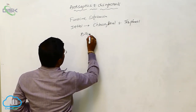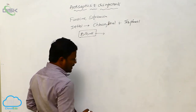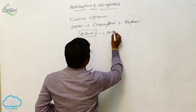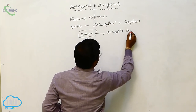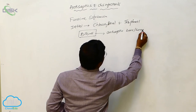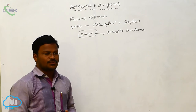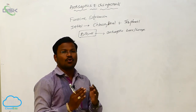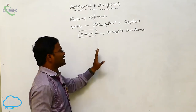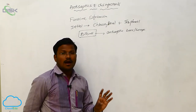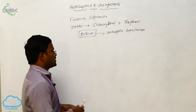Bithionol is a chemical substance which is used to prepare antiseptic bars or soaps. These antiseptics serve to kill or to stop the growth of microorganisms. The purpose of use of antiseptics and disinfectants is to kill or to stop or to decrease the growth of microorganisms.